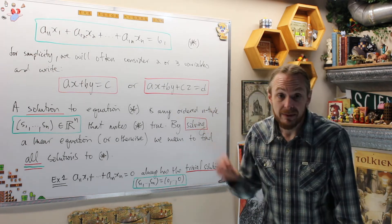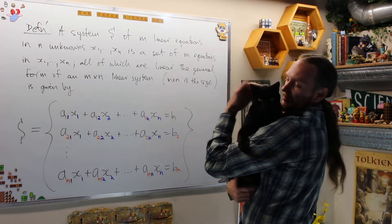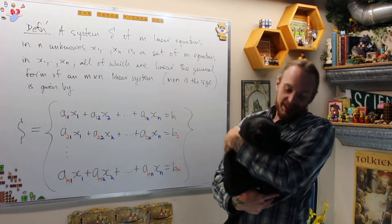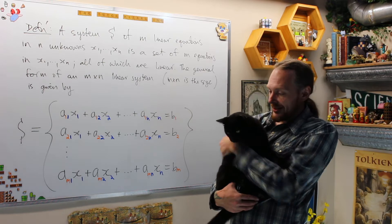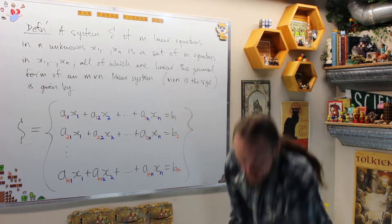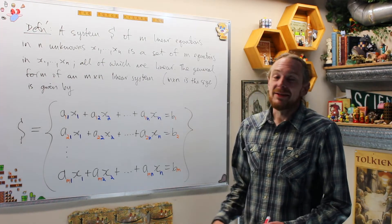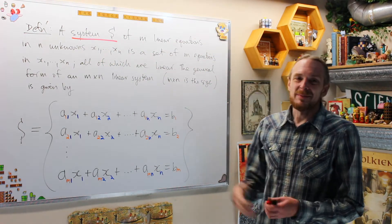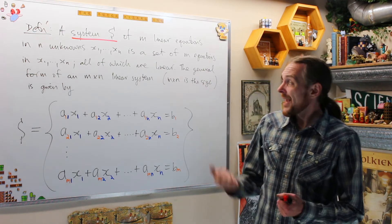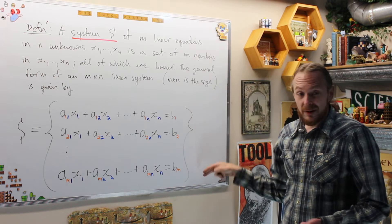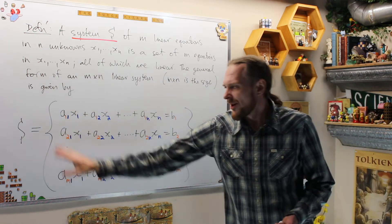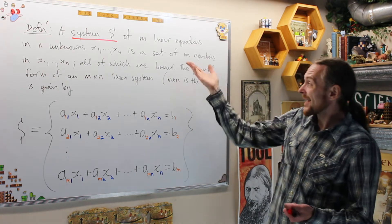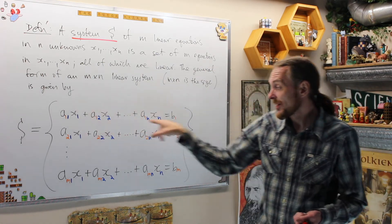Now let's look at a system of M equations in N unknowns. We're going to define a linear system, which we'll call S for simplicity. That system consists of M linear equations in N unknowns, x1 to xn.